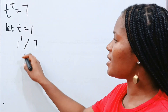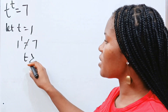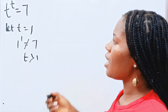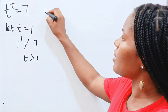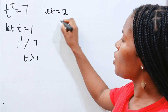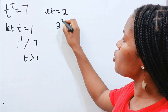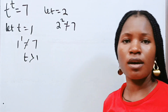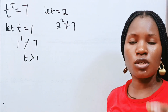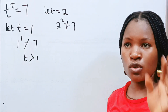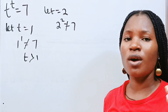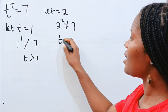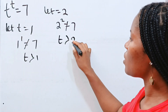So it simply means that t is greater than 1. Now if we say let t be equal to 2, 2 to the power of 2 is not equal to 7 as well. Because 2 to the power of 2 is 4. So it still means that t is greater than 2.